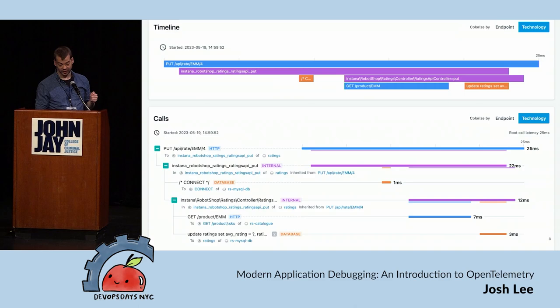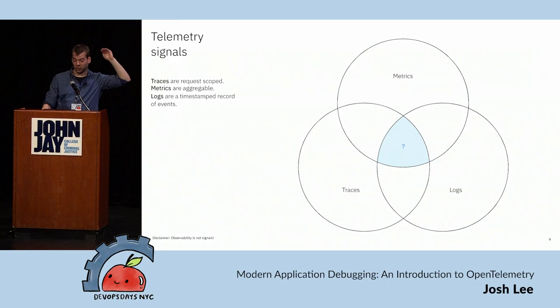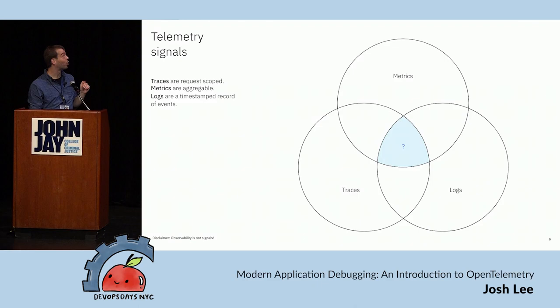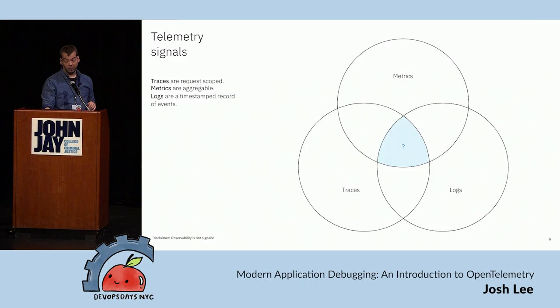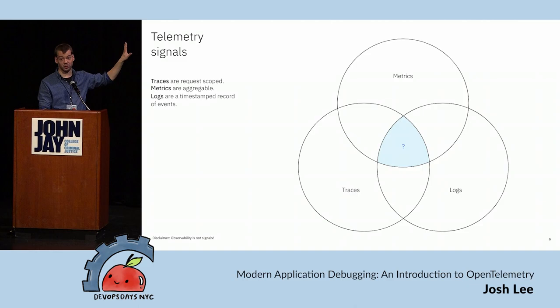So how does tracing fit in? Let's briefly review the fundamental characteristics of our telemetry signals. Traces are request-scoped — they follow a user request through the entire system; that's their defining characteristic. Metrics are aggregable — we can do math with them, which is nice. And logs are just a timestamped record of events — they're very verbose and let us put in as much information as we want. One important thing: observability is not about signals. This might look like the three pillars, but I'm discussing it because it becomes relevant when talking about OpenTelemetry.